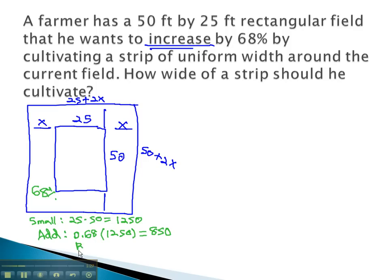To get the total area of the big rectangle, then, we need the small rectangle, the 1,250, plus the rectangle frame that we have added, 850, to get our total area of 2,100.